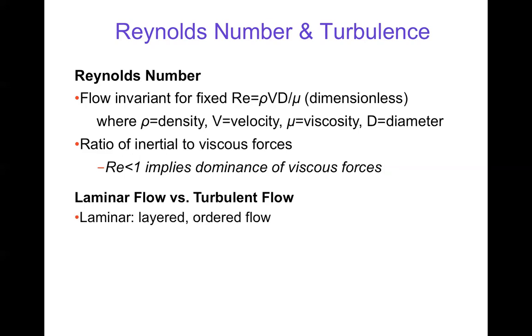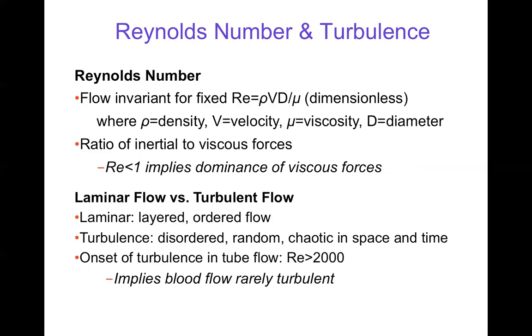Laminar flow is very layered, ordered flow, and that's usually highly viscous flow. Turbulent flow is disordered, random, chaotic, and that usually happens when inertial forces are much more important than viscous forces. In tube flow or vessel, in a very perfectly circular vessel, turbulence begins at Reynolds numbers above about 2000. If you take blood flow in a typical vessel and look at the Reynolds number, it will be much less than 2000, so blood flow is rarely turbulent in the circulation. It can be sometimes not perfectly laminar, but just because it's not perfectly laminar doesn't mean it's turbulent. It can be disturbed or oscillatory, have some complexity to it, but not be turbulent. Usually blood flow in circulation is not turbulent.